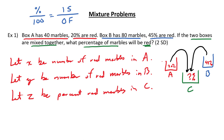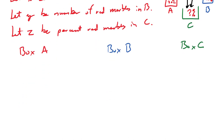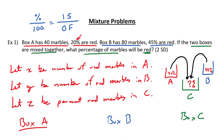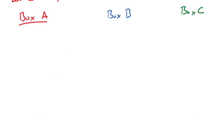Let's use all this knowledge to solve this problem. I have box A, box B, and box C — let's build three separate equations. I have three unknowns, so I need three separate equations. Starting with box A: 20% are red and the box has 40 marbles total. So 20/100 = X/40, where X is the number of red marbles and 40 is our total. That's our first equation.